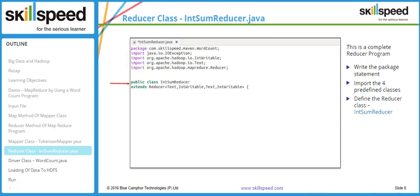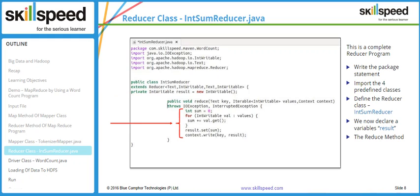Arrow number three shows the reducer class declaration — it's called IntSumReducer and it extends the Reducer class. Arrow number four declares a variable called 'result' of type IntWritable, used to hold the final result. Arrow number five summarizes the reducer logic.